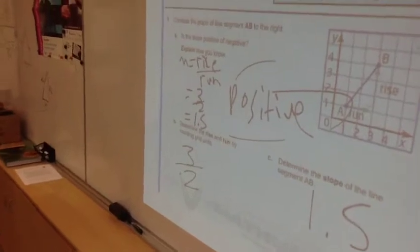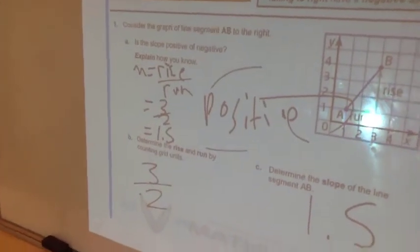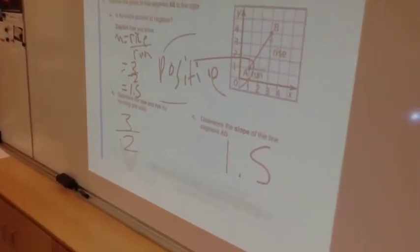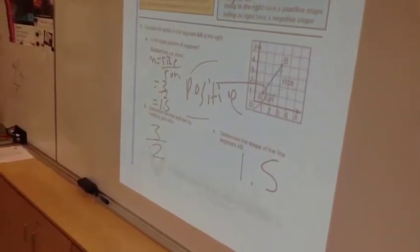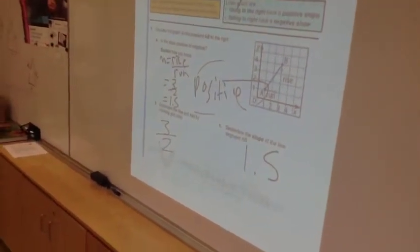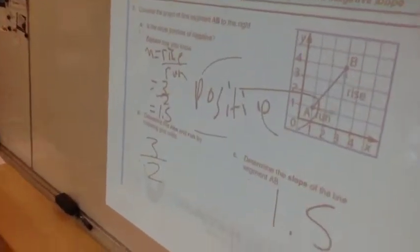Josh, you've got that the slope is positive. How do you know it's positive? Because the rise to the right is rising. Awesome, it's rising to the right. That's one way.